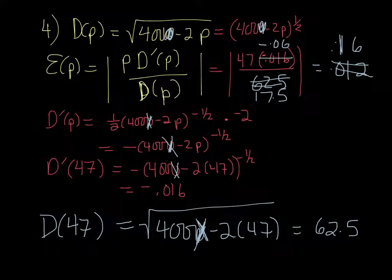So 47 times -0.06 divided by 17.5 is -0.1611. But we're taking the absolute value of that. So it's going to be positive 0.16. And you might get a slightly different answer, depending on where you rounded. But the result is going to be the same, even if you get a slightly different answer.